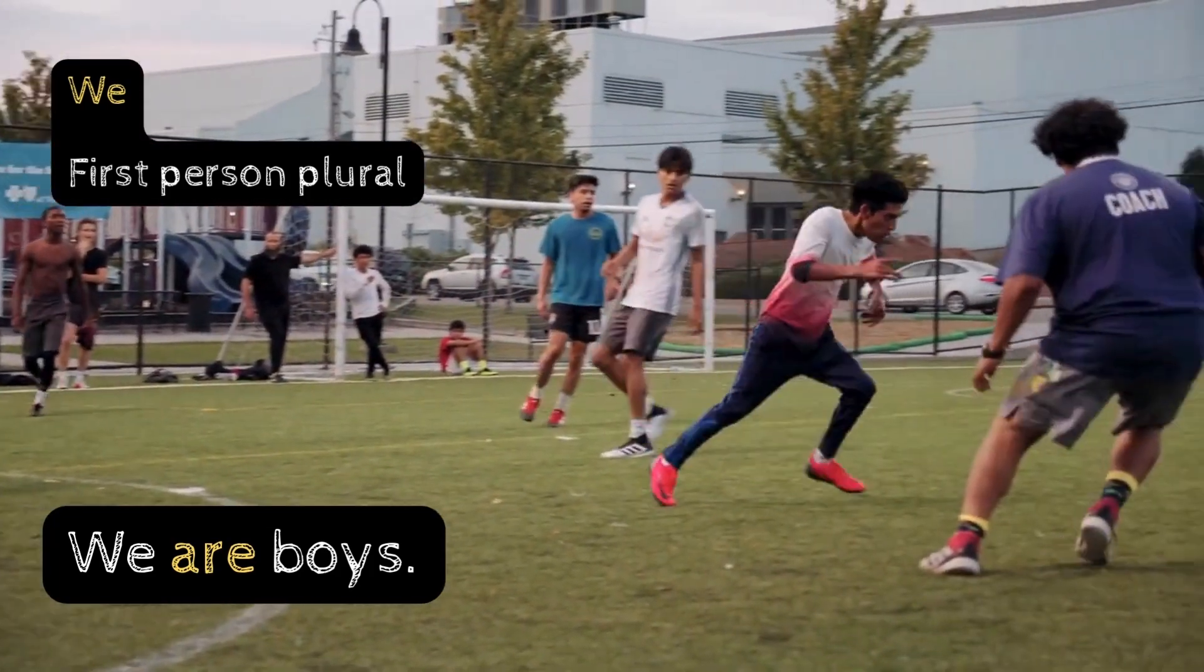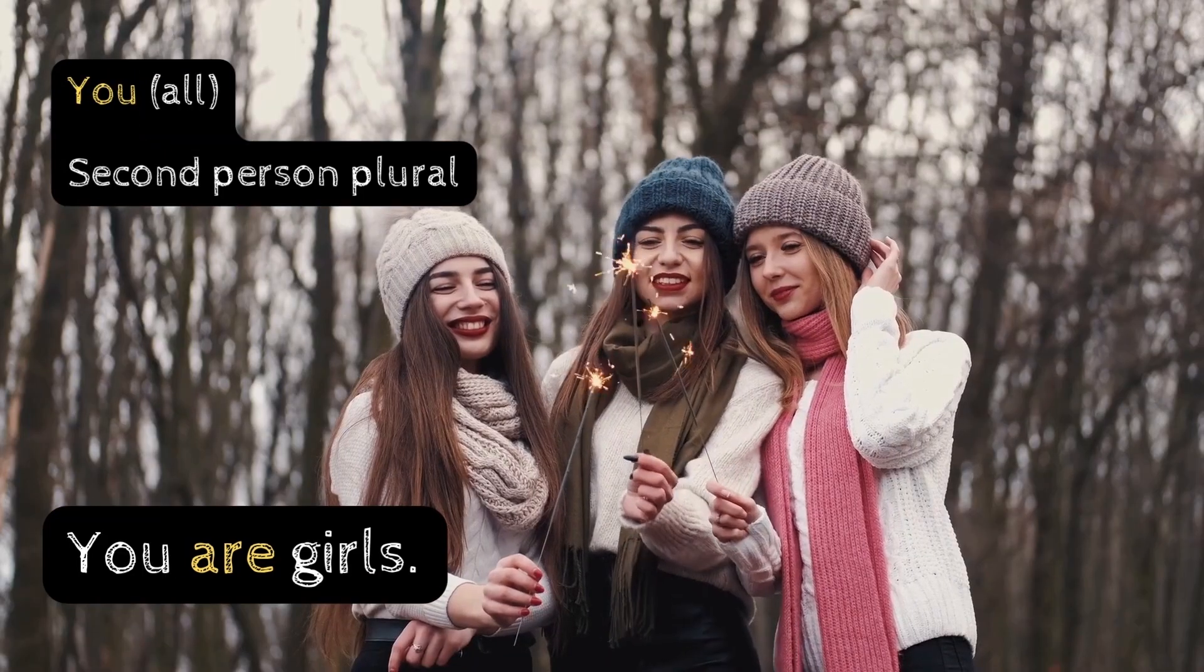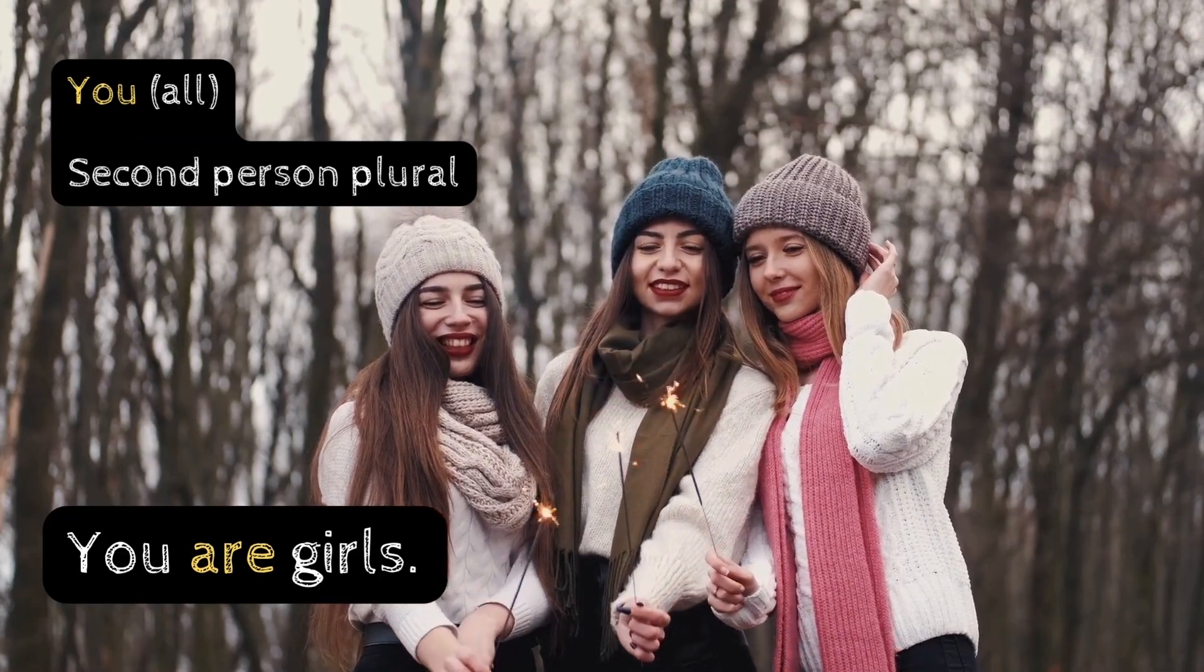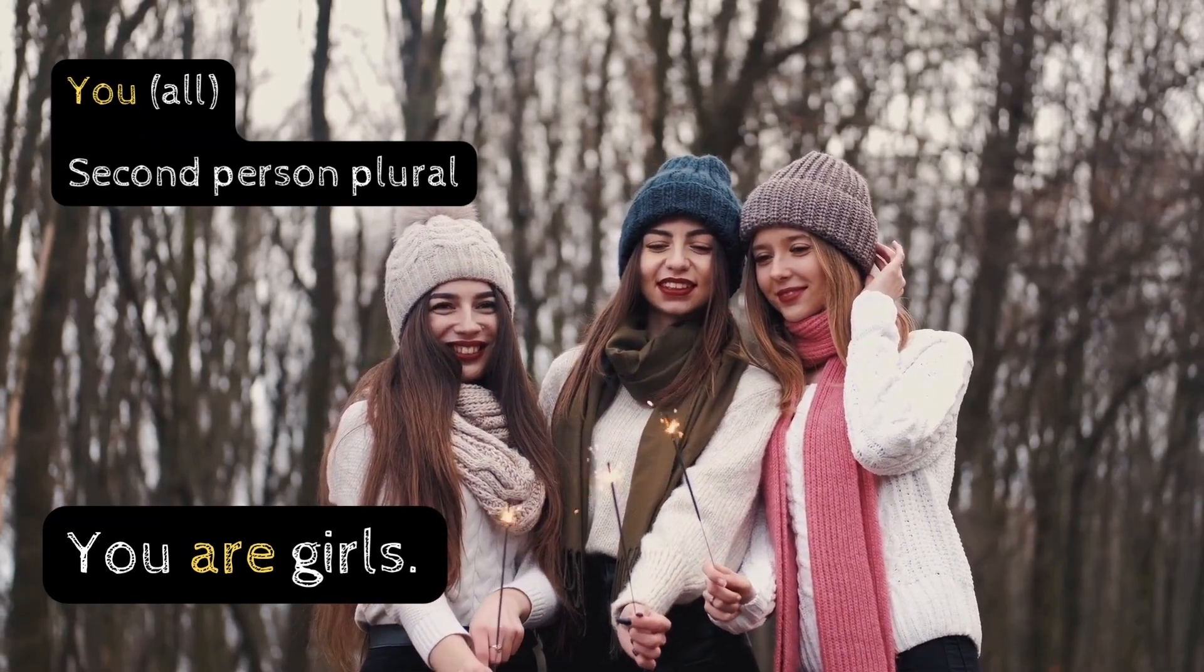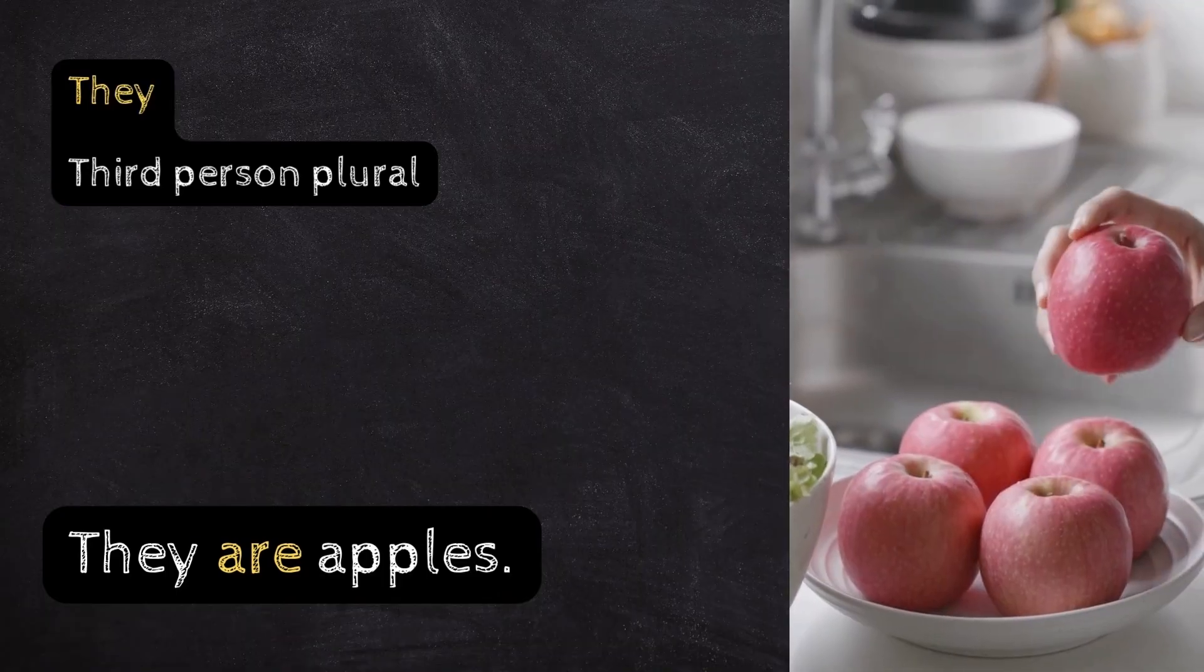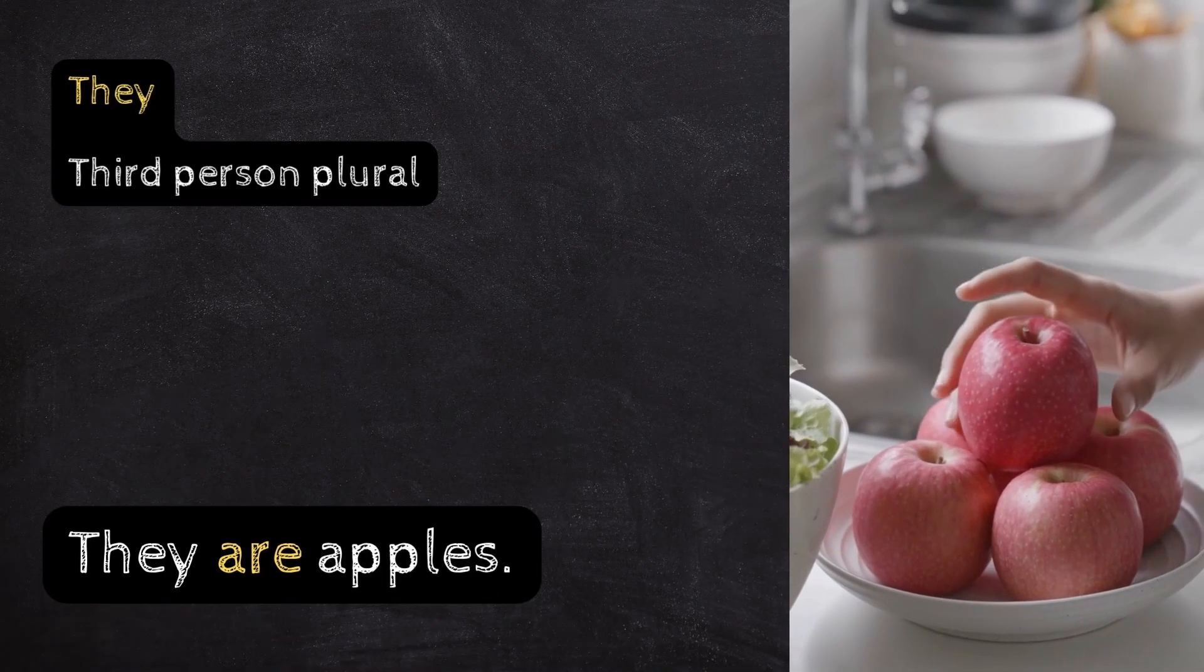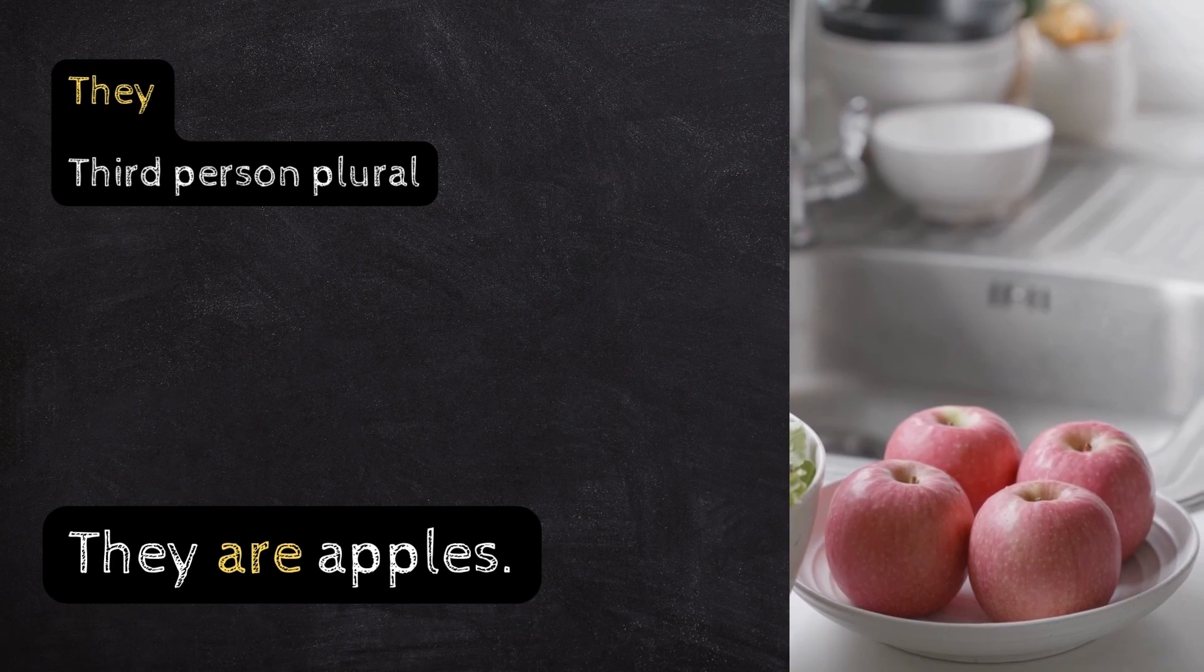It - First Person Plural. We are boys. You - Second Person Plural. You are girls. They - Third Person. They are apples.